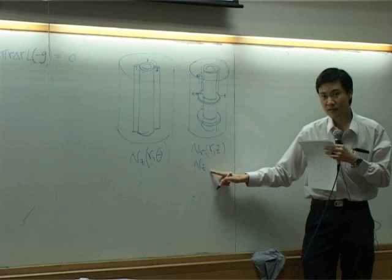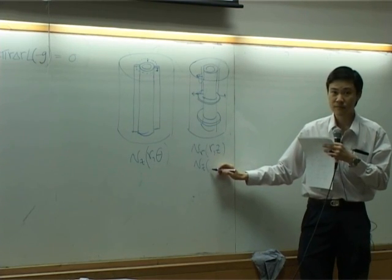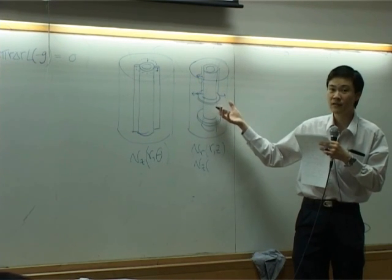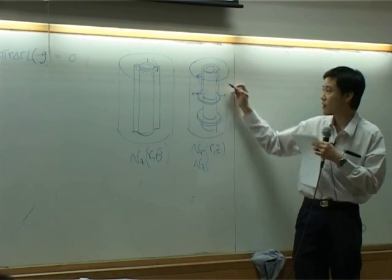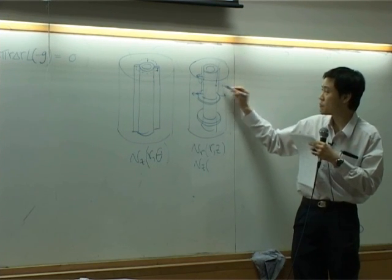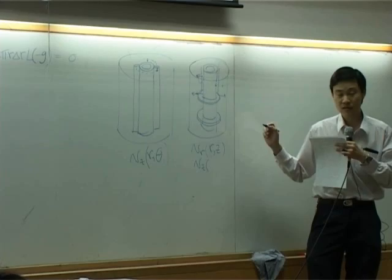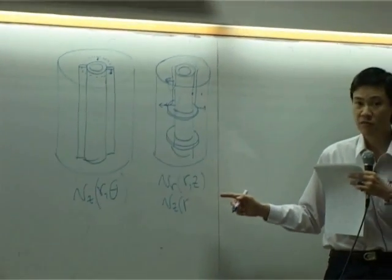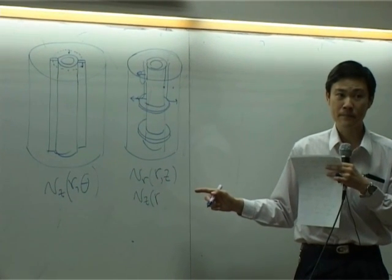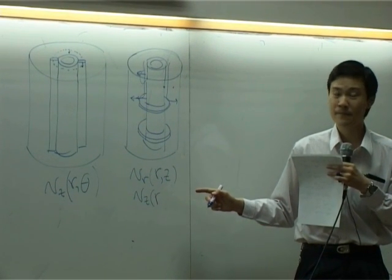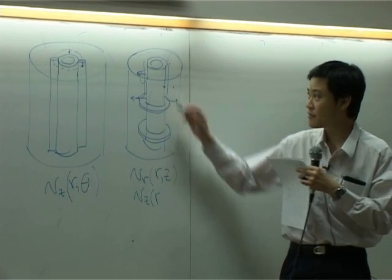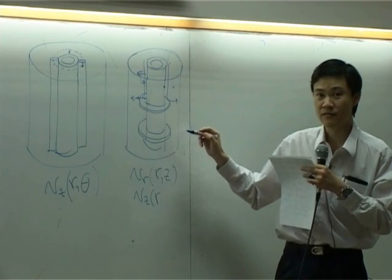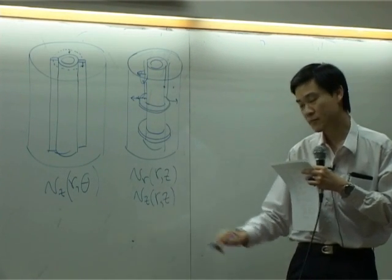What about Vz? Does it change with respect to r? Sure. Even though we do not have any fin, it's changed with respect to r. At this position, Vz is zero. At this position, Vz is not. So therefore it will be a function of r for sure. Does it change with respect to z? Yes. In this case, yes. Right here, there's a velocity in z component. Right there, it's not. So Vz is changing with respect to z.